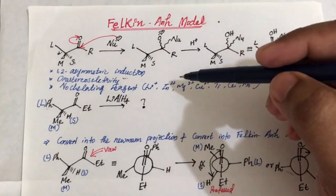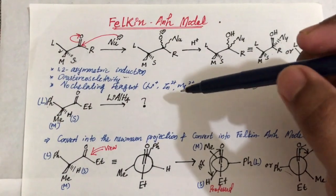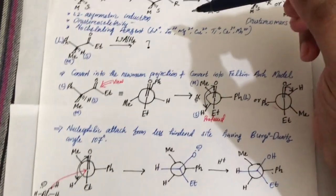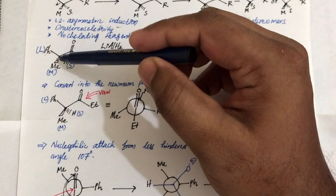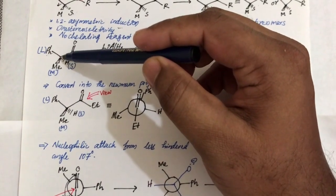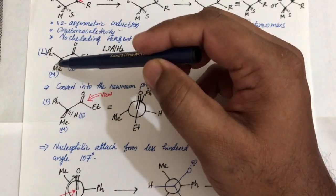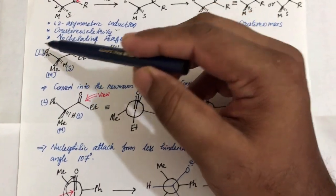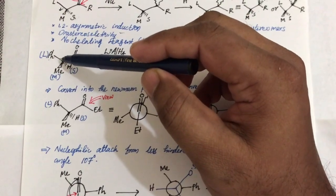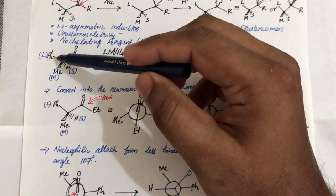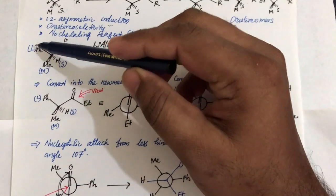Now let's go deeper with an example. This is our carbonyl compound with an alpha chiral center bearing a phenyl substituent in the plane of paper, and a methyl group in dash. The substituents at this alpha chiral center are classified by size into large, medium, and small.